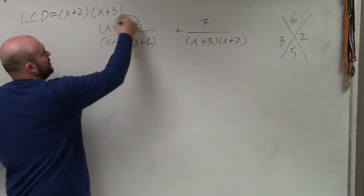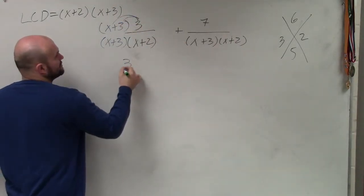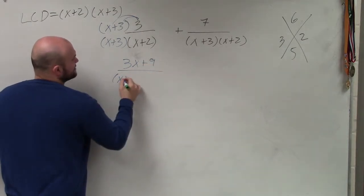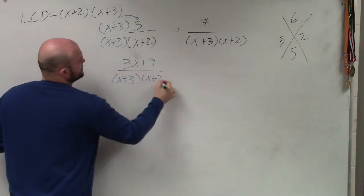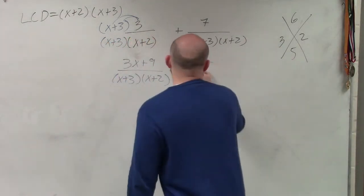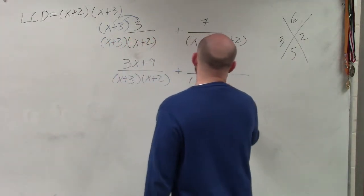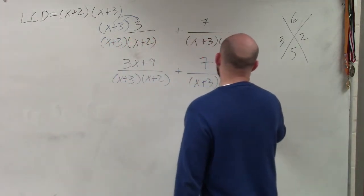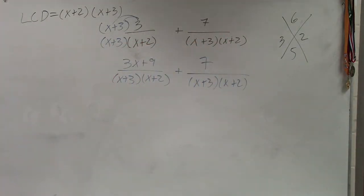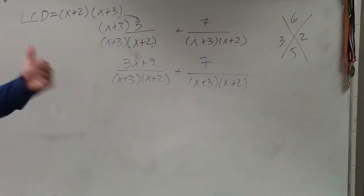I apply the distributive property. So what I obtain is (3x + 9) divided by (x + 3)(x + 2), plus 7 over (x + 3)(x + 2). Now you can see that my denominators are exactly the same — just like if I had 1/4 plus 3/4, right?